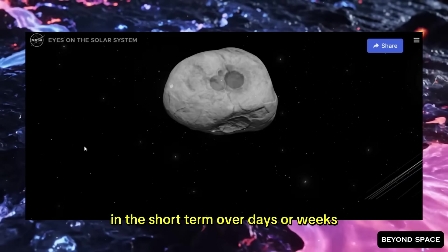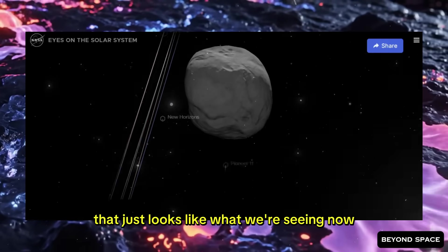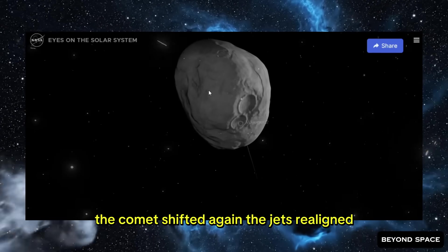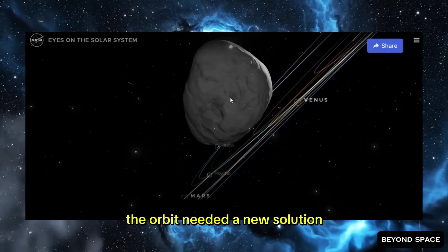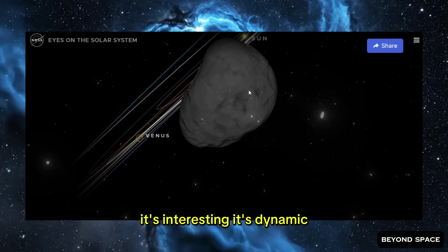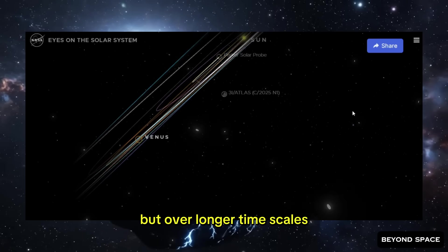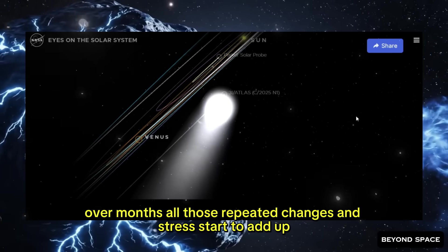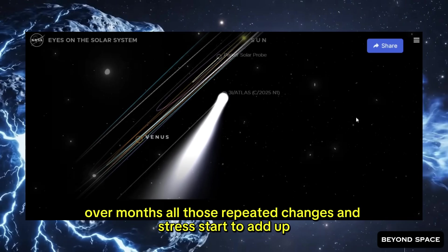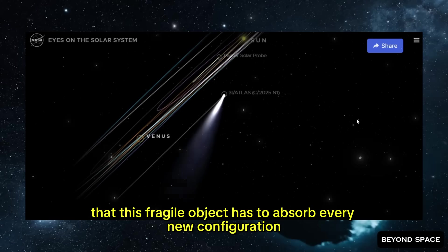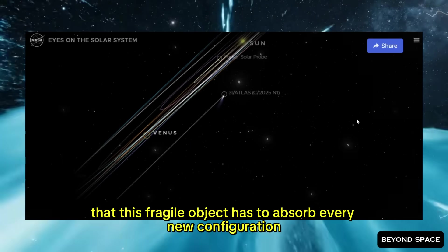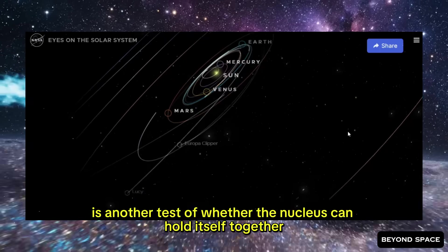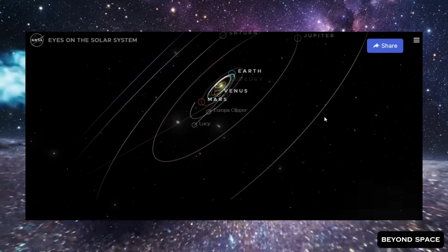In the short term, over days or weeks, that just looks like what we're seeing now. The comet shifted again. The jets realigned. The orbit needed a new solution. It's interesting. It's dynamic. But it's not necessarily dangerous. But over longer timescales, over months, all those repeated changes in stress start to add up. Every shift is another load that this fragile object has to absorb. Every new configuration is another test of whether the nucleus can hold itself together under these conditions.